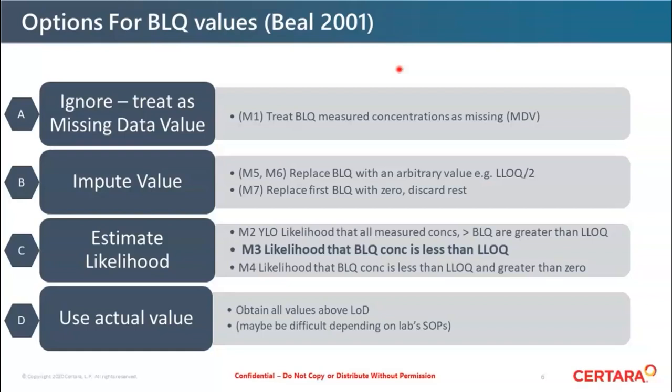Now the last option I've got here is D, using the actual value. And that's saying, go back to your lab and ask them nicely if you can have all the data above the limit of detection. And this might be difficult depending on the lab's SOPs and general practice in GLP labs, not to reveal the data below the limit of quantification. But actually, if that is available, you'll generally get much better precision of your parameter estimates and much better likelihood of choosing the right structural and residual error model. So that would always be the preferred option if possible. But what we want to look at in this presentation is what can I do if I don't have those actual values? And what are the best options to do?